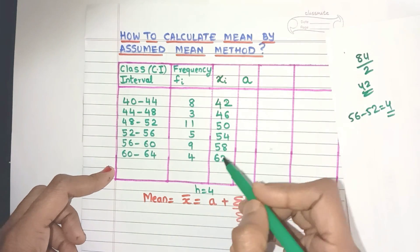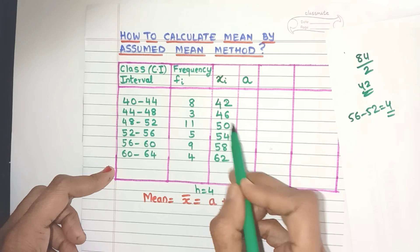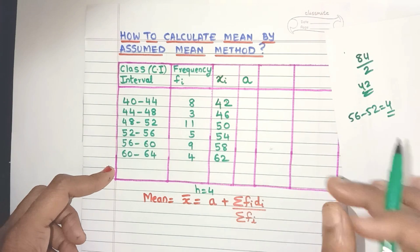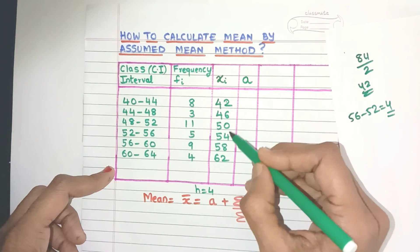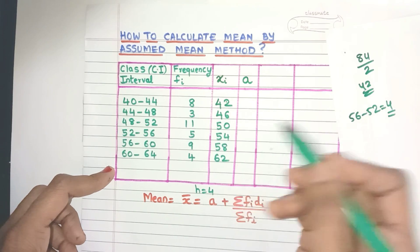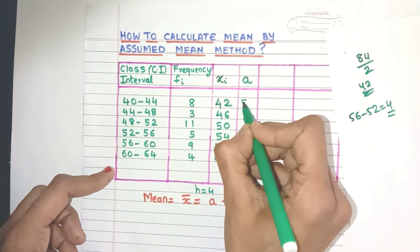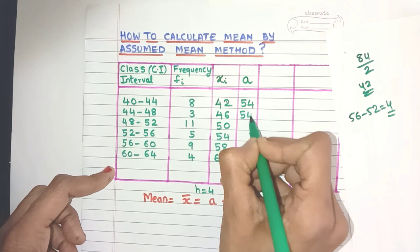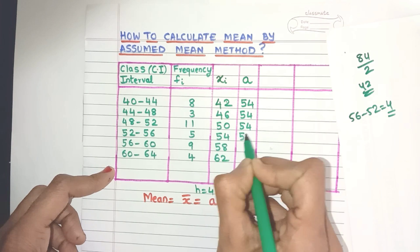You are just assuming it as the mean of the data. So any xi value, but it's better if you take the middle xi value so that you will get very small numbers. So here there are two middle values. See, 50 and 54. You can choose any of them. I will go for 54. So I am choosing my A as 54.